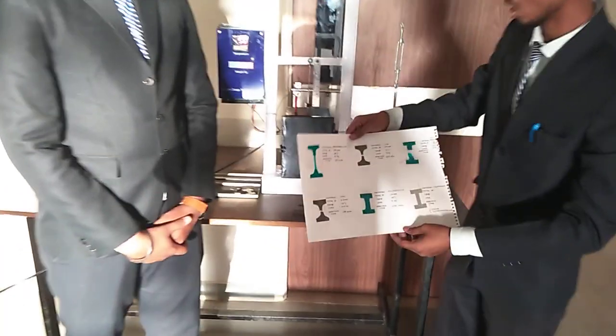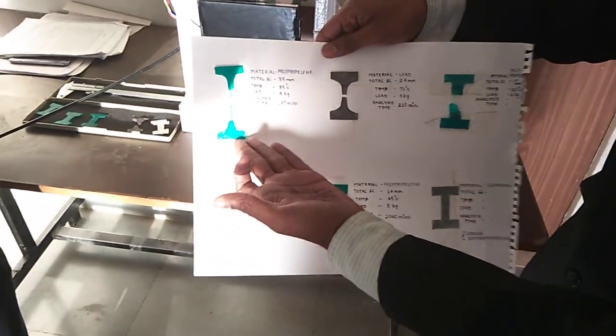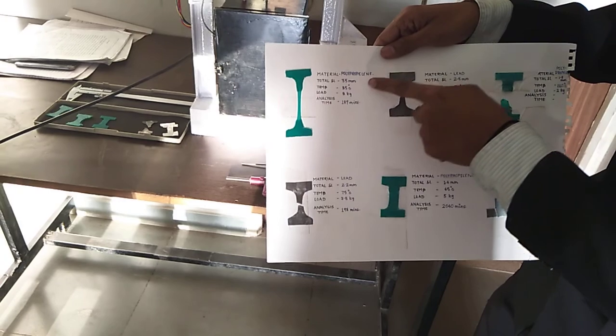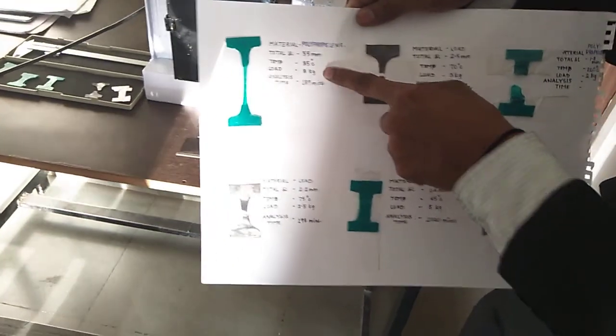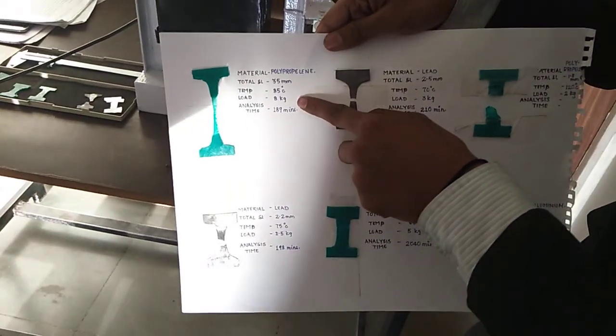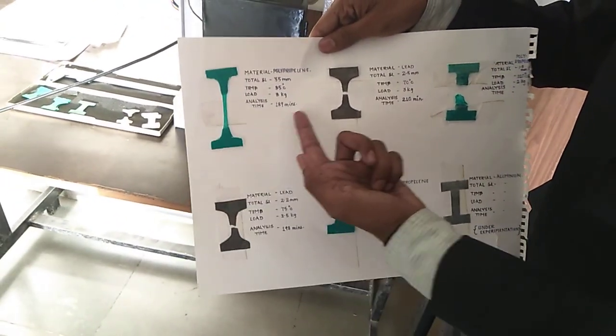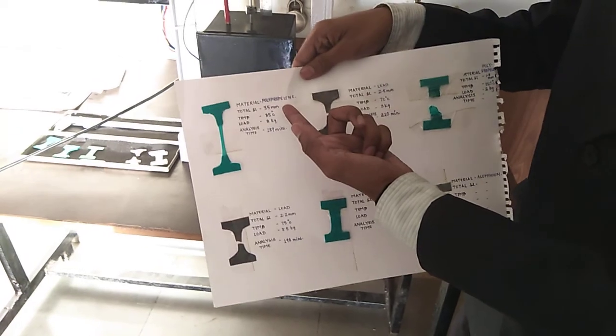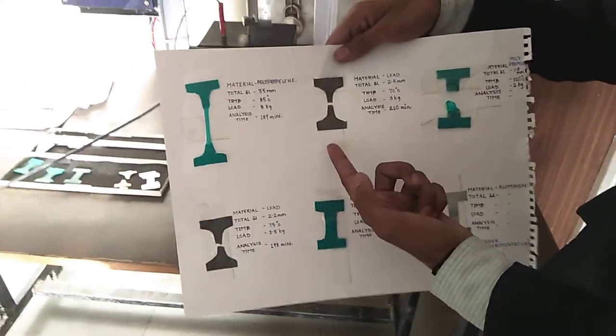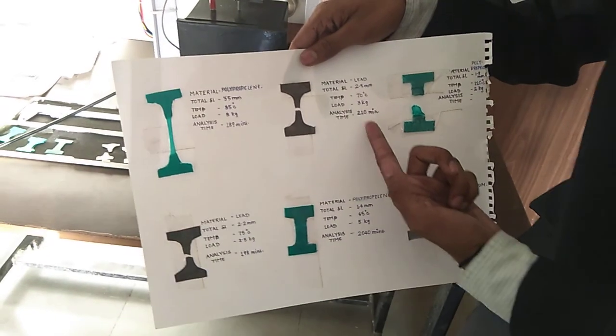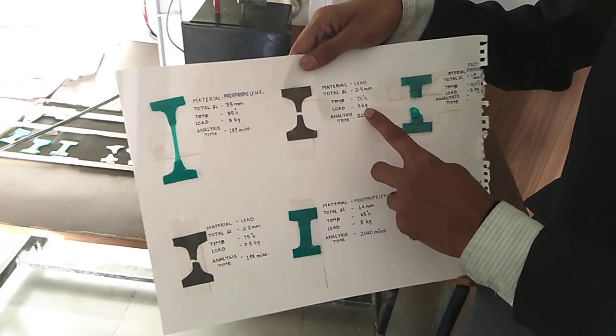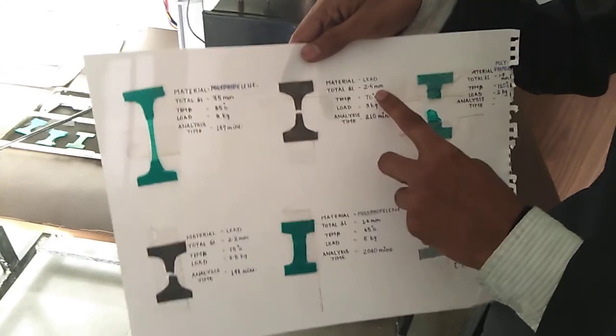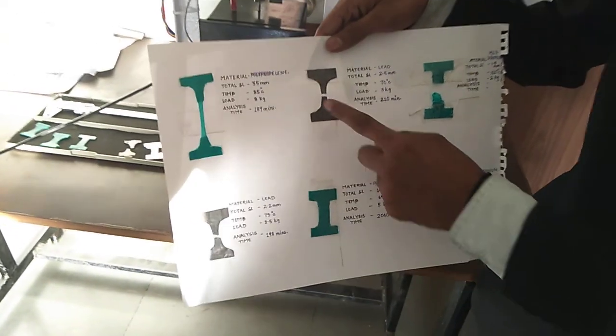We have done analysis on metals like polypropylene, lead, and aluminum. For polypropylene, we set the temperature at 85 degrees Celsius and load of 8 kg. The analyzed time for creep was 189 minutes and the deflection in the specimen was 35 mm. The second specimen was lead, with temperature of 70 degrees Celsius and load of 3 kg. The analysis time was around 210 minutes and the elongation was 2.5 mm before it broke.